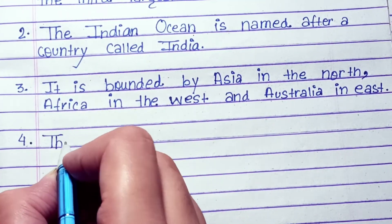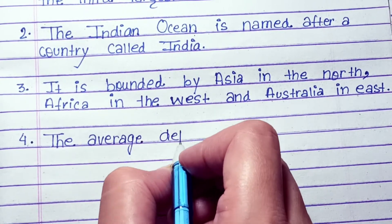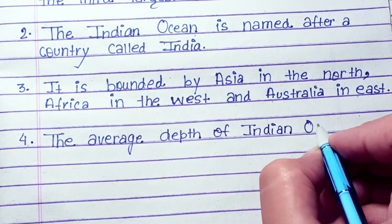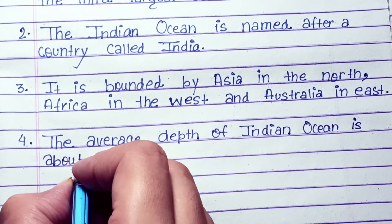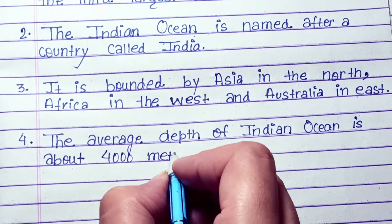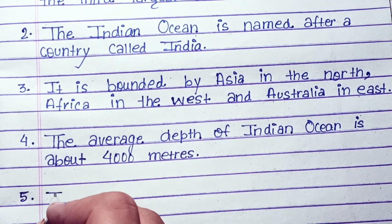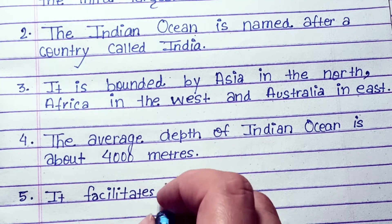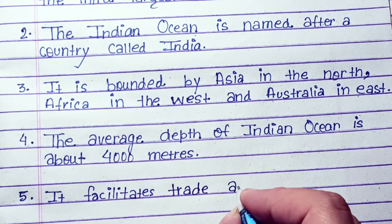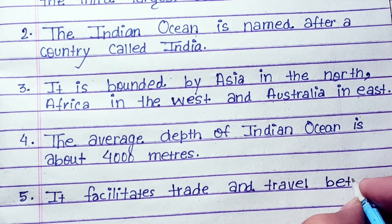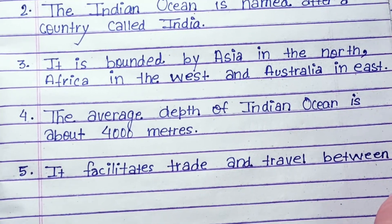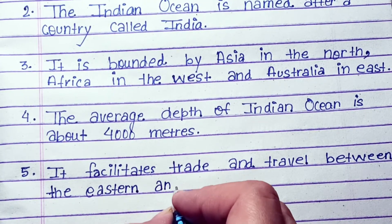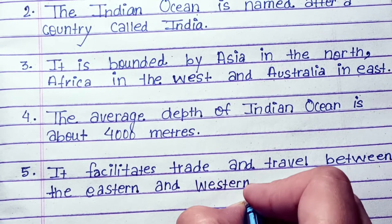It is bounded by Asia in the north, Africa in the west, and Australia in the east. The average depth of the Indian Ocean is about 4,000 meters. It facilitates trade and travel between the eastern and the western countries.